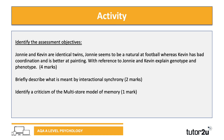With the first question: Johnny and Kevin are identical twins. Johnny seems to be a natural at football, whereas Kevin has bad coordination and is better at painting. With reference to Johnny and Kevin, explain genotype and phenotype. Here you've got a stem — a scenario. It's an application question, and hopefully you've noticed that because it says 'with reference.' You've got to explain their behaviour using a theory, which is genotype and phenotype. It's a common type of question where you're given a scenario and asked to explain behaviour linked to those cases.